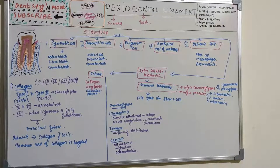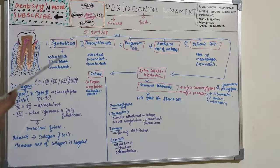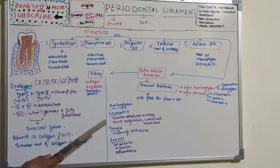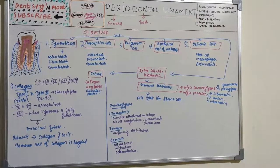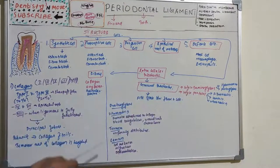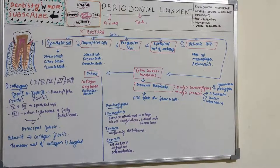Tenascin, also known as cytotactin, is the other glycoprotein identified in the periodontal ligament. It is found mostly in healing wounds and, unlike fibronectin, is not uniformly distributed throughout the PDL but is concentrated between the less densely packed collagen fibers near cementum and alveolar bone. Laminin is a glycoprotein component of the basement membrane of epithelial cell rests of Malassez and has properties of cell adhesion, migration, and differentiation. We will now move on to the principal fibers of periodontal ligament.